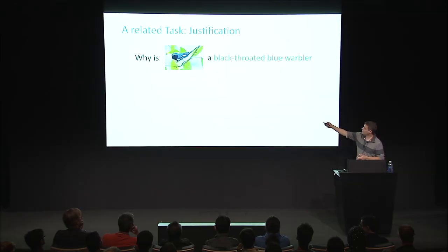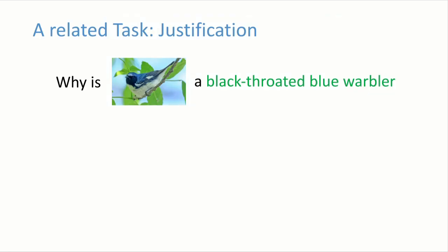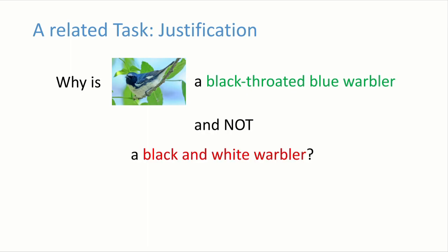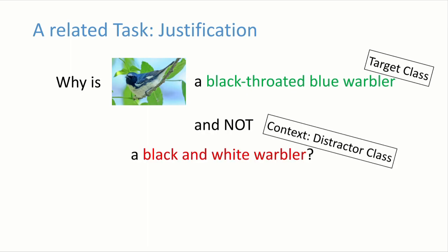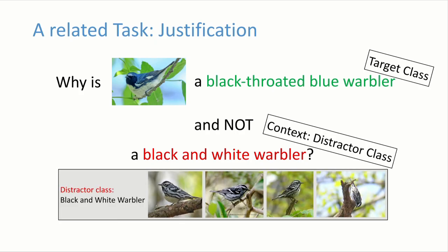A related task is the following: often a classifier gives you a classification decision, but you would like to know why that decision was made. It would be interesting if a classifier could tell you, in addition to saying this image is a black-throated warbler, it could also tell you why — give hints, justification, or explanation why it's that species and not some other visually similar bird. In this case, similar to the previous case but different, the context here is another class rather than just another image.